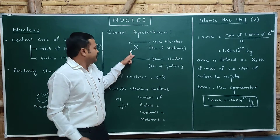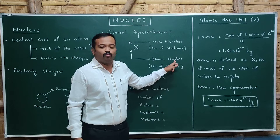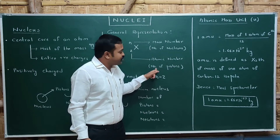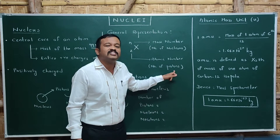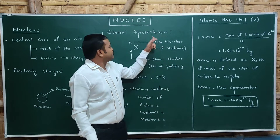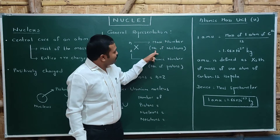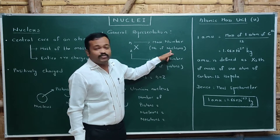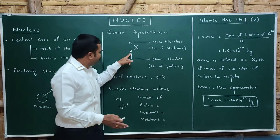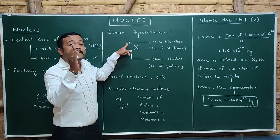In general, a nucleus can be represented as X with mass number A and atomic number Z. Z is the atomic number — it is the number of protons present inside the nucleus. A is the mass number — it is the number of nucleons present inside the nucleus.